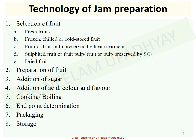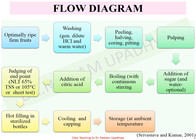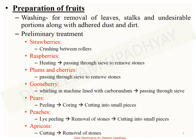Once we have selected the fruits, we have to prepare them before addition of sugar. Fruit preparation generally includes washing — done with dilute HCl and warm water to remove traces of sprays — then peeling, halving, coring, pitting, and pulping. The preparation step varies from fruit to fruit. For example, strawberries are crushed between rollers; raspberries are heated with a small quantity of water for softening and then passed through sieves to remove stones.